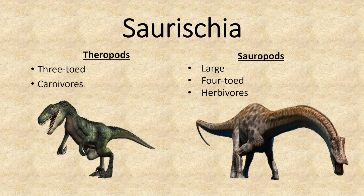The Saurischia group was further broken down into two subgroups: theropods and sauropods. Theropods were three-toed carnivorous dinosaurs, meaning they had a meat-based diet — the example included is a Velociraptor. Sauropods were large dinosaurs who were four-toed and had a herbivore or plant-based diet — the example included is a Diplodocus. These are the two subgroups of the Saurischia group.